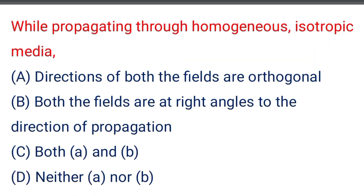Next question: while propagating through homogeneous isotropic media — option A: direction of both the fields are orthogonal, option B: both the fields are at right angles to the direction of propagation, option C: both A and B, option D: neither A nor B. The correct answer is option C: both A and B.